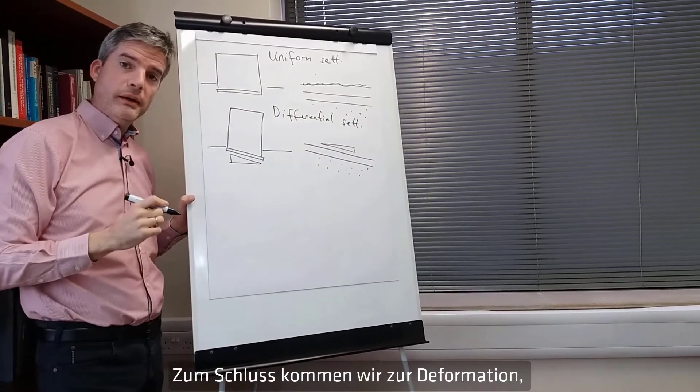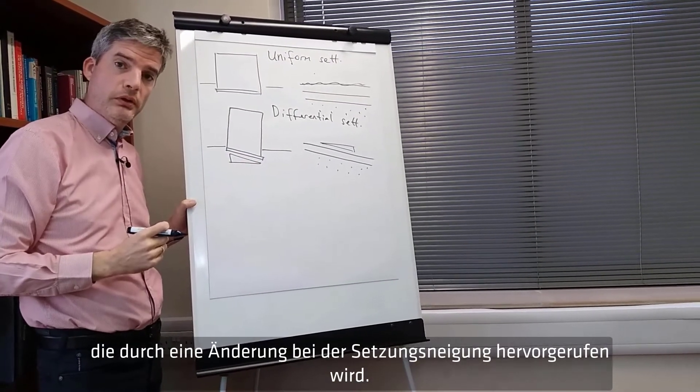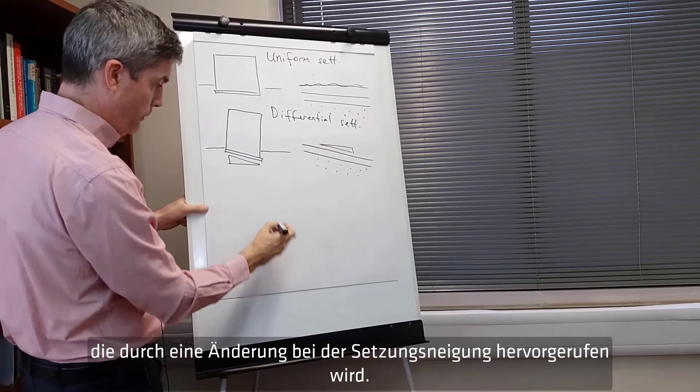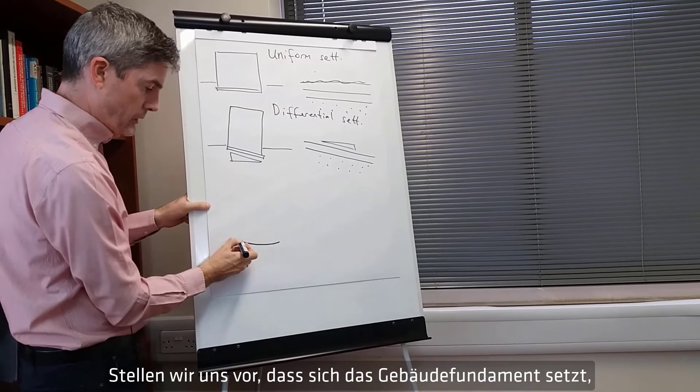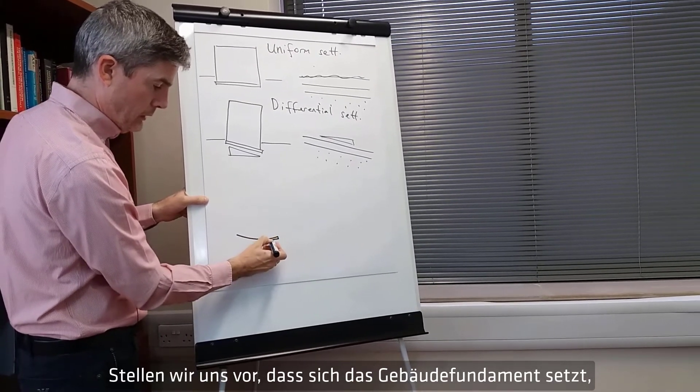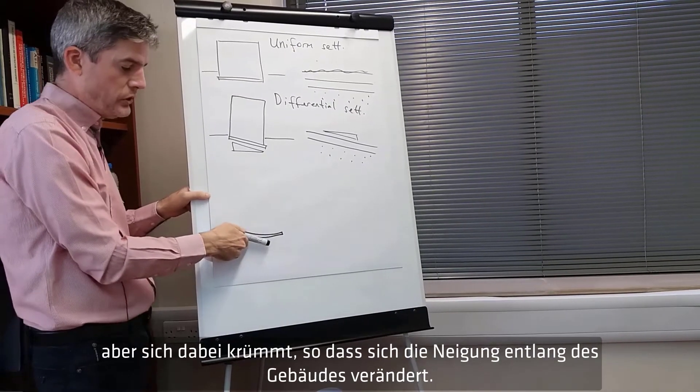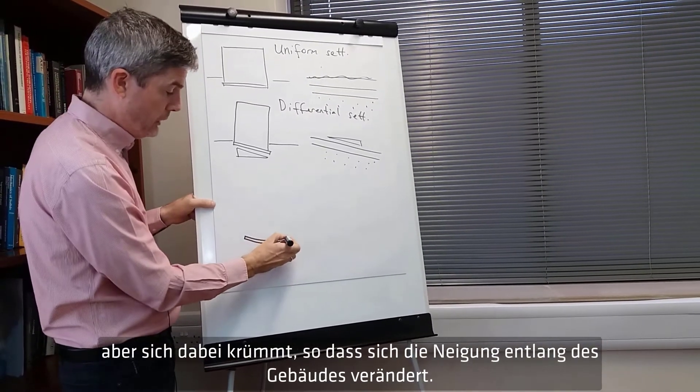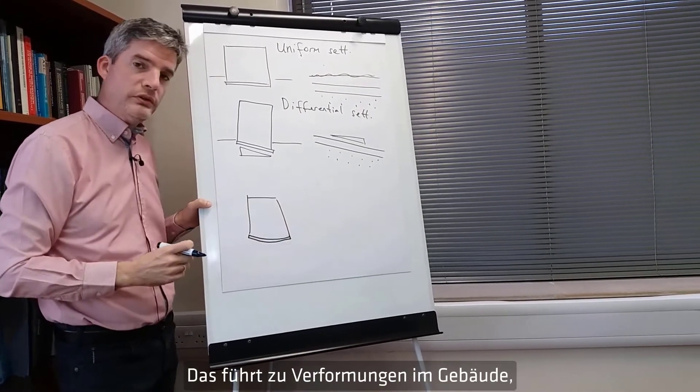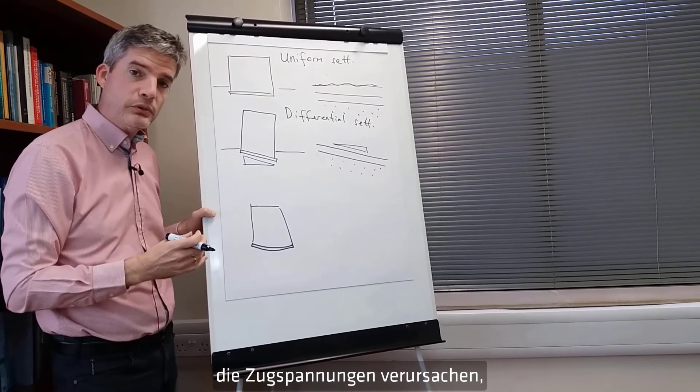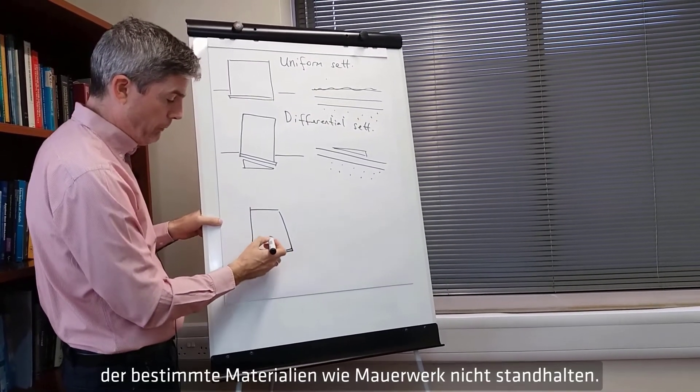Finally we come to curvature which is caused by a change in the slope of settlement. So let's imagine that the building foundation settles but in a curved way so that the slope is changing as we go across the building. That's going to cause distortions in the building that create tensile strains that cannot be sustained by certain materials such as masonry and brickwork. So that is going to cause the damage and the cracks in the building.